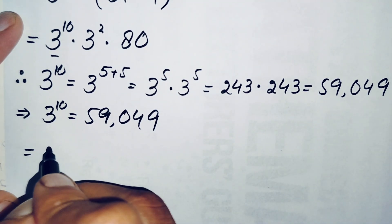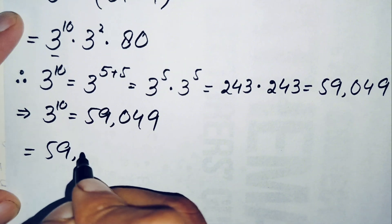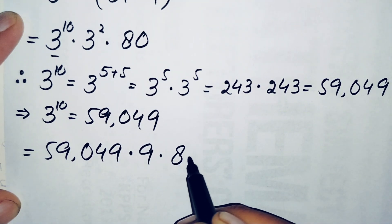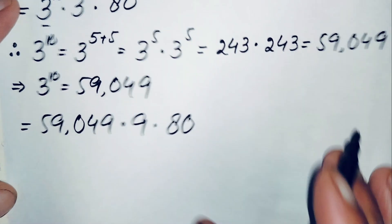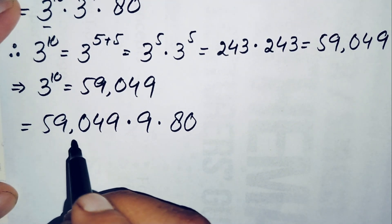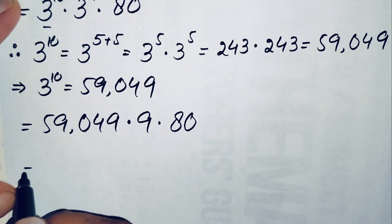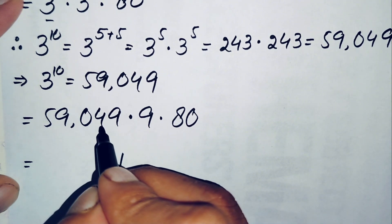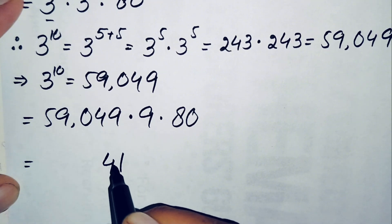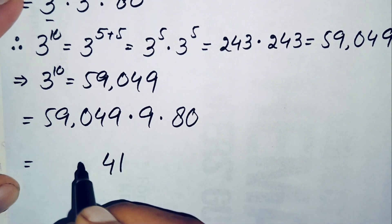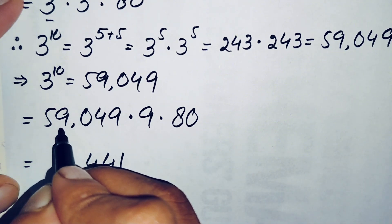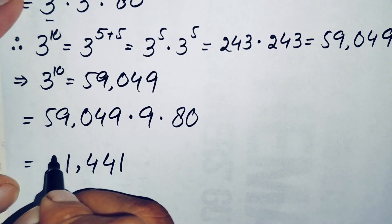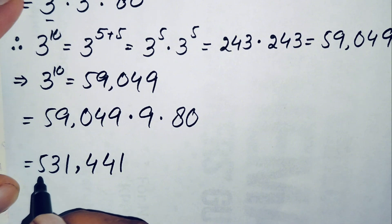Replacing 3 raised to power 10 with 59049, and 3 squared with 9, the expression becomes 59049 times 9 times 80. First we multiply 59049 by 9: 9 times 9 is 81 (write 1, carry 8), 9 times 4 is 36 plus 4 is 40 (carry 4), 9 times 0 is 0, 9 times 5 is 45 plus 8 is 53, giving 531441.